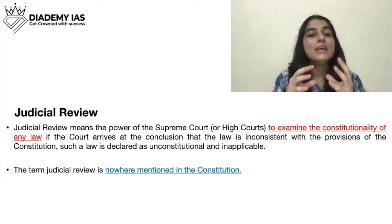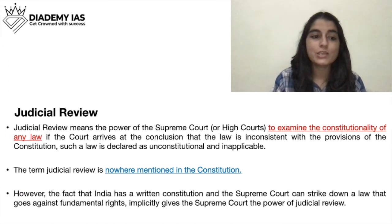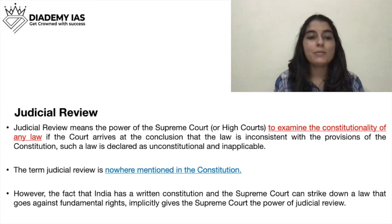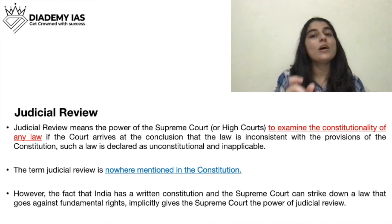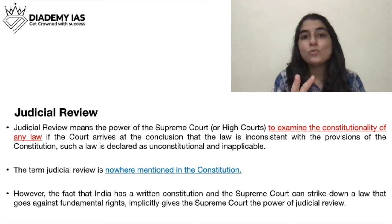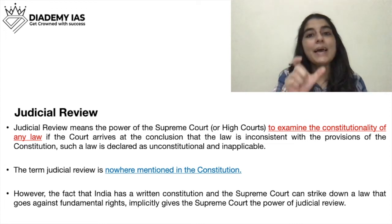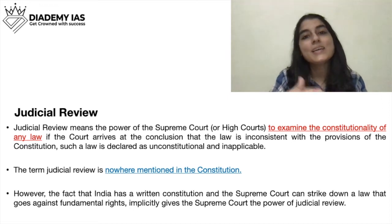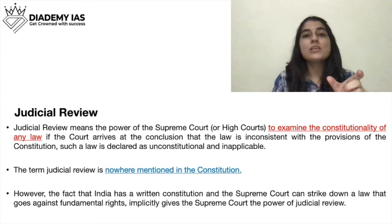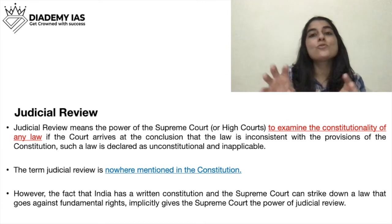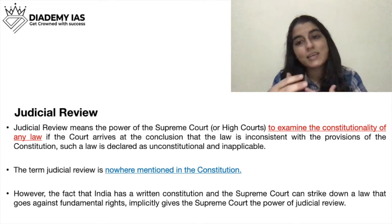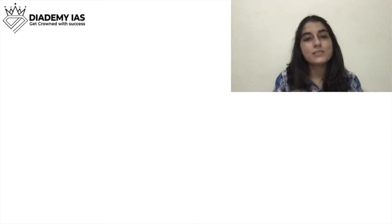Now the term judicial review is nowhere mentioned in the constitution. However, the fact that India has a written constitution and the Supreme Court can strike down a law that goes against fundamental rights implicitly gives the Supreme Court the power of judicial review. There are two terms — implicitly and explicitly. If constitution mein directly judicial review mentioned hota, then explicitly the Supreme Court has the power of judicial review. But since it is not directly mentioned, it is implicitly there. In order to protect those rights, the court can declare some laws unconstitutional. So this is judicial review.